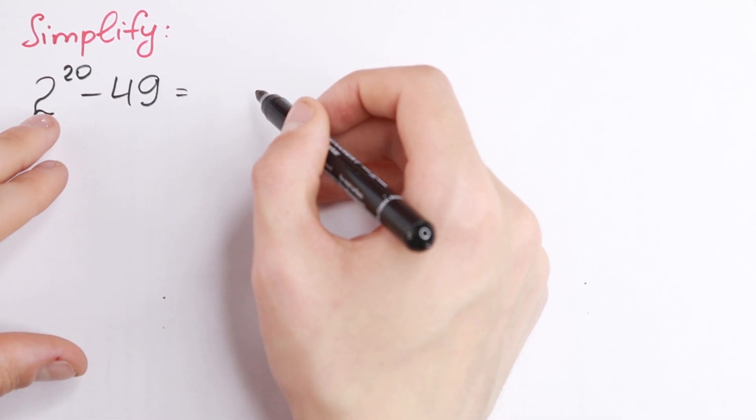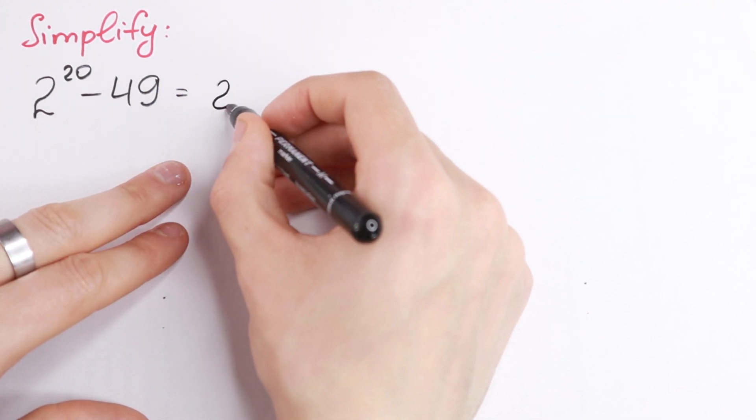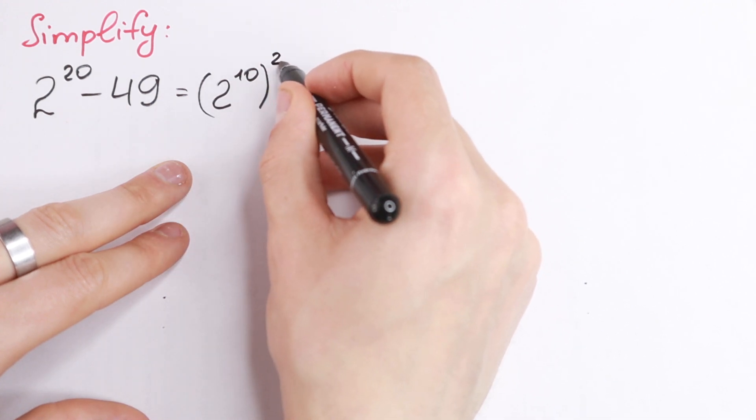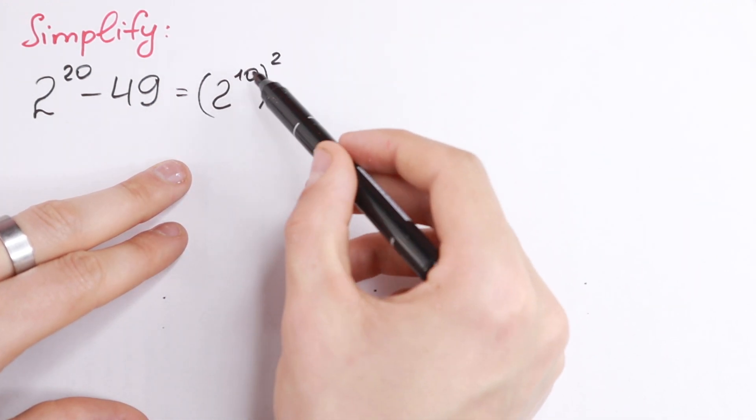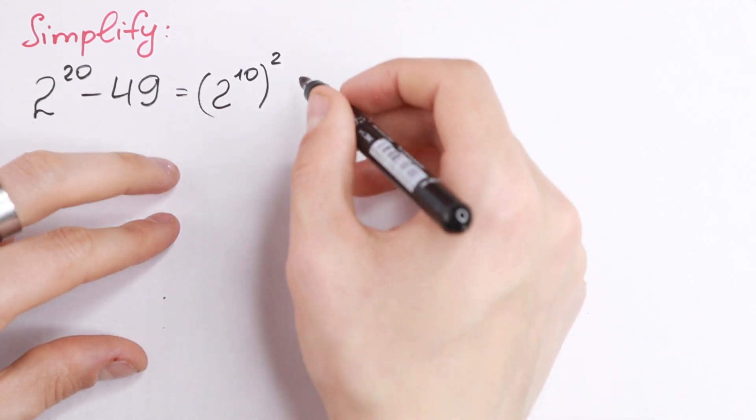First of all we can write this 2 to the 20th power as a square. So 2 to the 10th power raised to the second power. If we raise this we will have the same as right here.